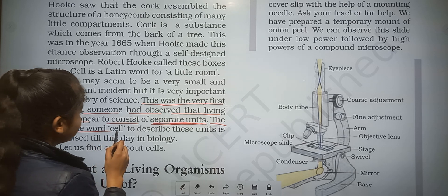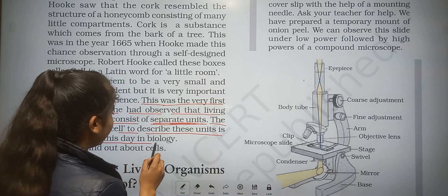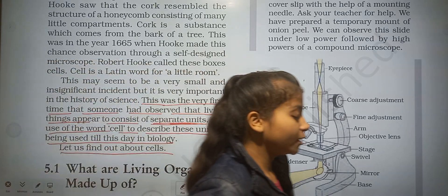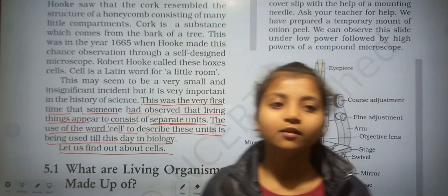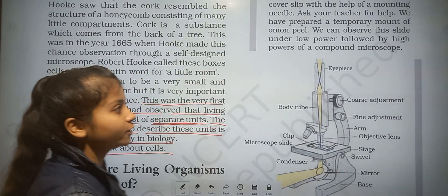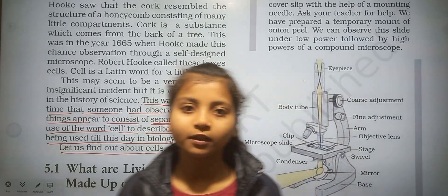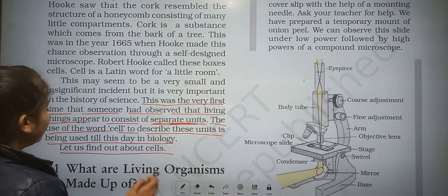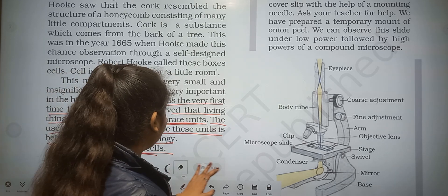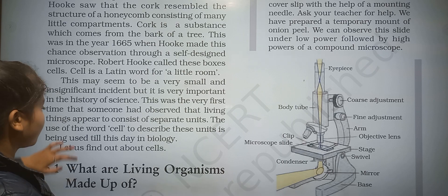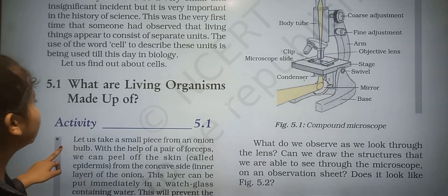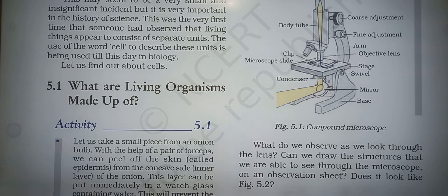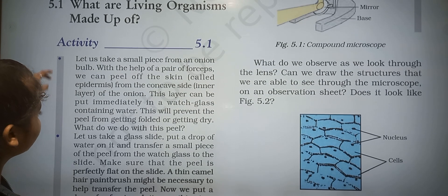The use of the word 'cell' to describe this unit is still used in biology to this day. In biology we read about all physical activity, about animals and plants, and the basic unit of plant and animal is the cell. Living organisms are made up of cells. Now let us do an activity.